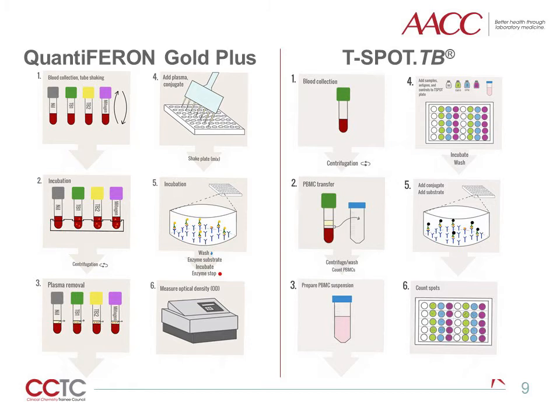The TSPOT.TB assay works in comparison as follows. The process again starts with blood collection, but here there are no special tubes — the blood is drawn into a regular lithium heparin tube. The tube is centrifuged, and the layer of peripheral blood mononuclear cells, which includes T cells, is transferred into a conical tube. The cells are washed and counted, and based on the cell count, a suspension of PBMCs is prepared at a specific concentration.